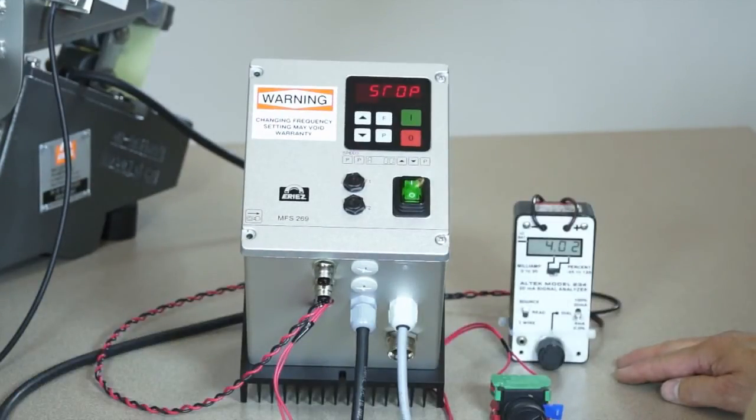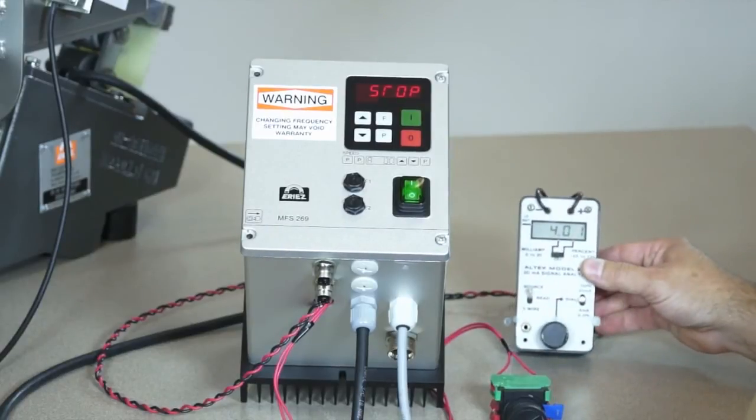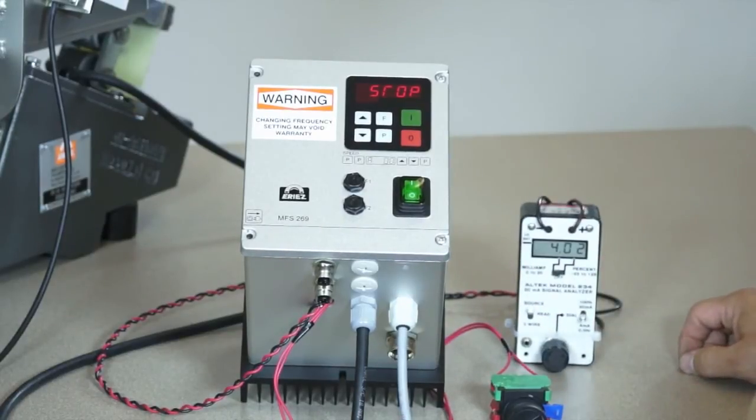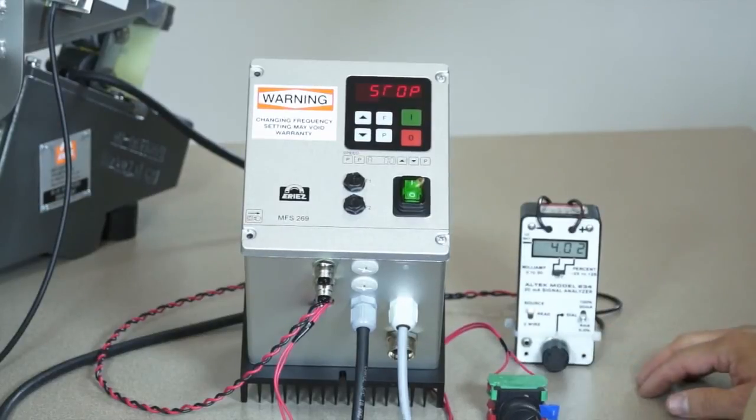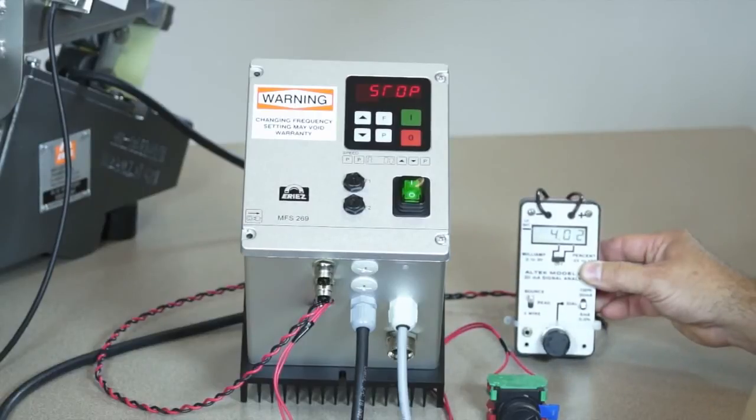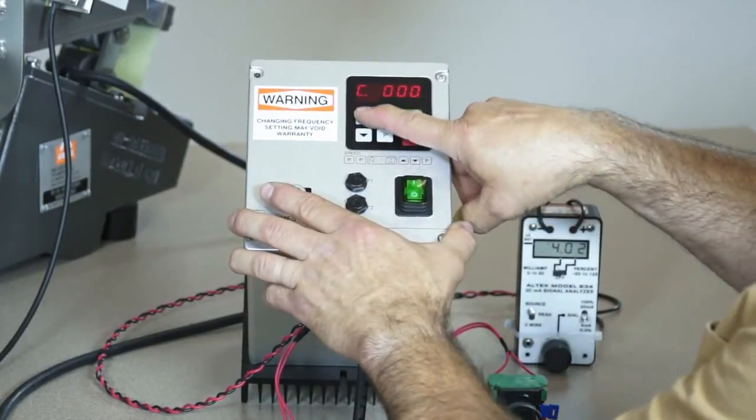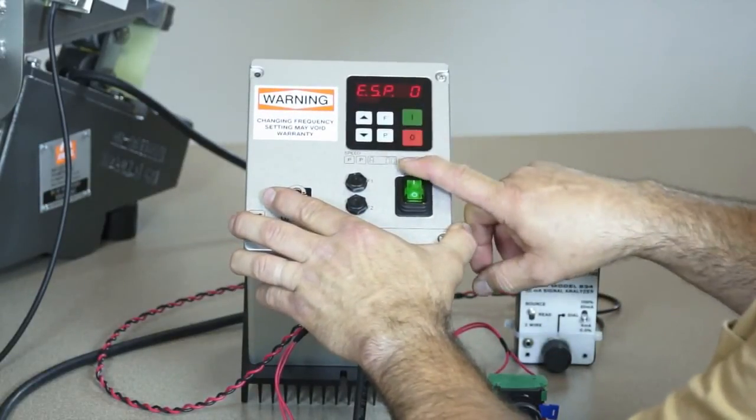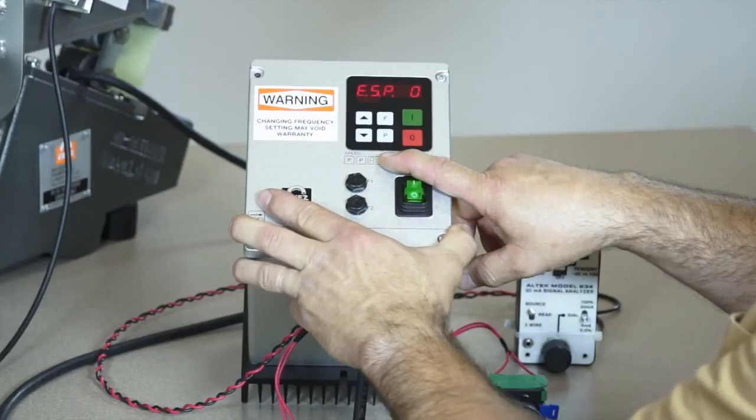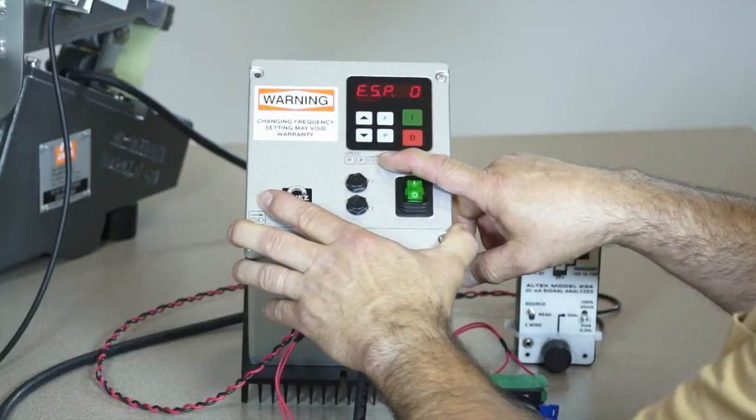Next, we will control the amplitude with a 4 to 20 milliamp current source similar to a PLC output. I have left the remote start-stop switch in place. I have connected a 4 to 20 milliamp current source in parallel with a 500 ohm resistor to terminals 7 and 8. Now go to parameter 003 and select the set point source.